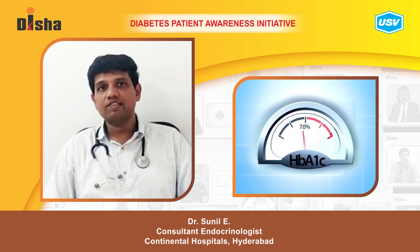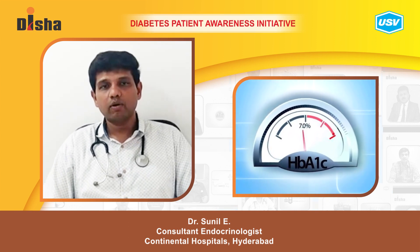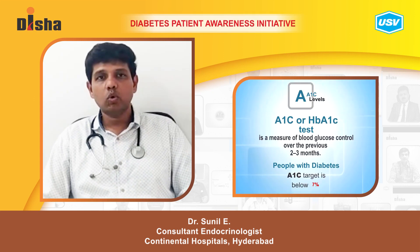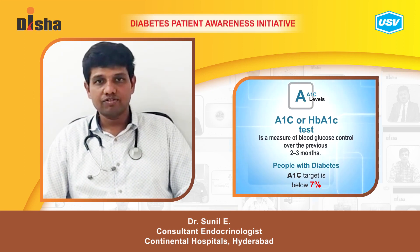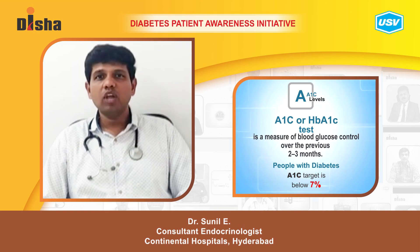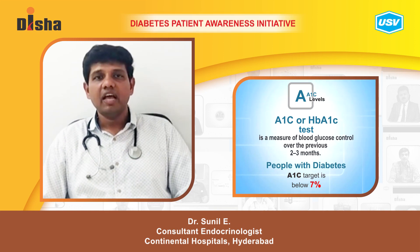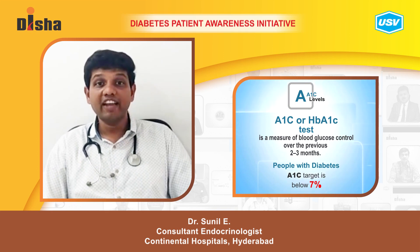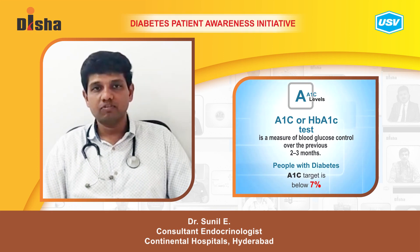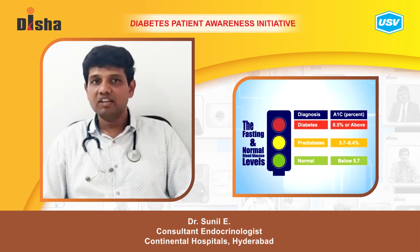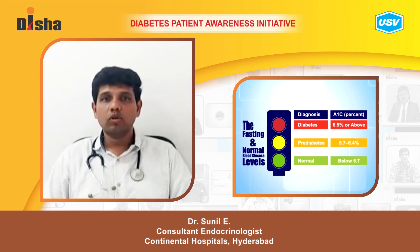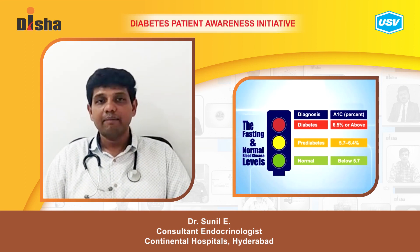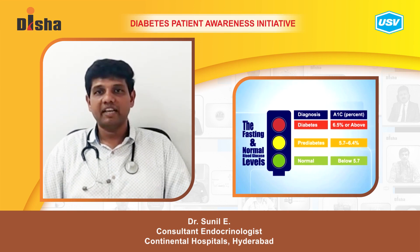Other tests include HbA1c, which is glycosylated hemoglobin — it measures the average blood glucose of the last three to four months. In 2010, the American Diabetes Association (ADA) allowed HbA1c to be used as a marker for the diagnosis of diabetes. If HbA1c is equal to or more than 6.5%, it is classified as diabetes mellitus.